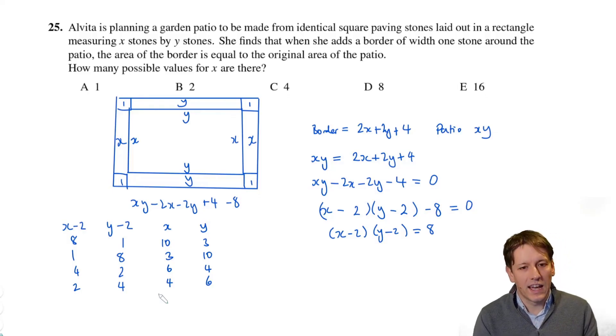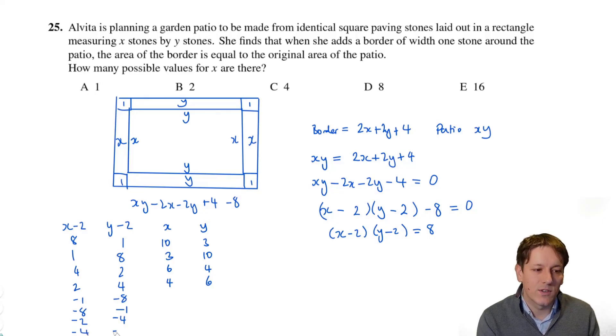Now, there's a slight subtlety here, and perhaps I'm not sure if this makes it a good question or a bad question, but ignoring the subtlety, actually you don't miss anything here, but we should consider it because we could have negative values for this product. It could also be minus 1 times minus 8, it could be minus 8 times minus 1, it could be minus 2 times minus 4, and it could be minus 4 times minus 2. But actually, none of these give us sensible values for x and y. If I add 2 here, I get 1 and minus 6, and I can't have minus 6, or I get minus 6 and 1, and otherwise I get 0 and minus 2, or minus 2 and 0 here. And again, none of those give sensible values for x and y.